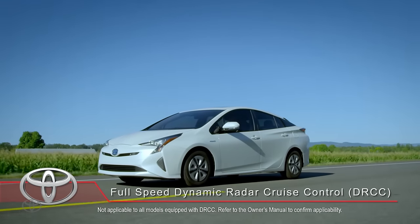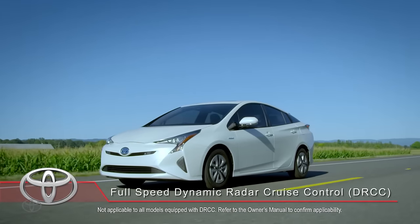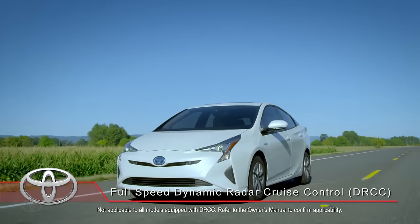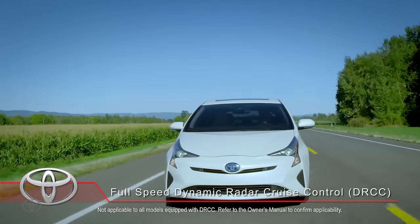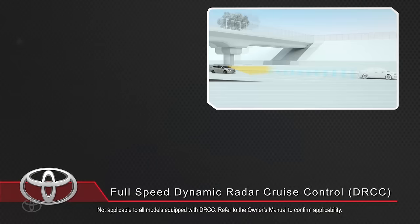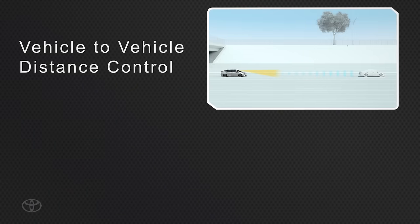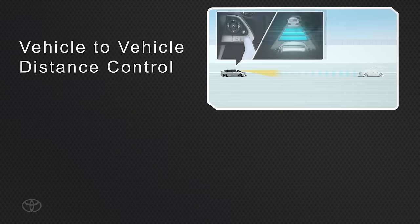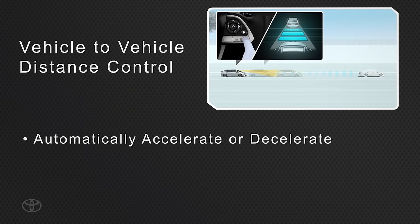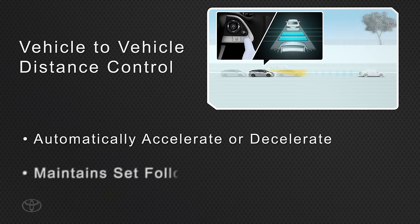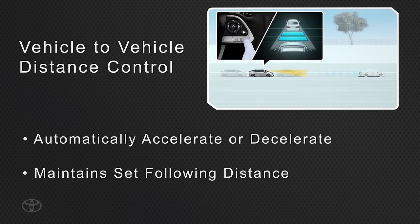Full-speed Dynamic Radar Cruise Control supplements conventional cruise control with vehicle-to-vehicle distance control. It allows the vehicle to automatically accelerate or decelerate in order to help maintain a set following distance from a vehicle traveling directly ahead.